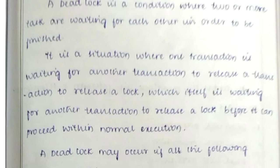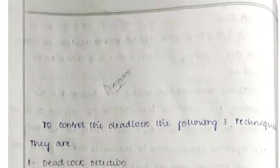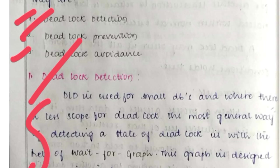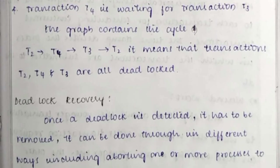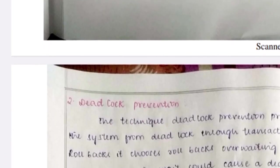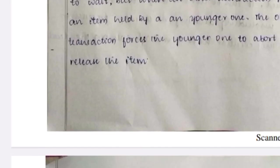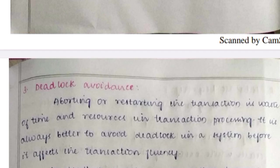Types of deadlock conditions include exclusive use and circular wait. Deadlock management covers deadlock detection, deadlock prevention, and deadlock avoidance. For deadlock recovery, we remove the deadlock using backup and recovery techniques. For deadlock prevention, two techniques are used: Wait-Die and Wound-Wait. For deadlock avoidance, the system dynamically checks every request to detect whether it is safe to grant it or not.